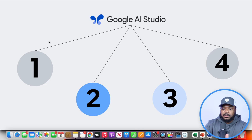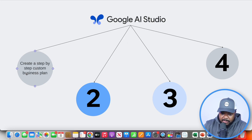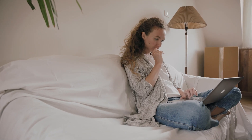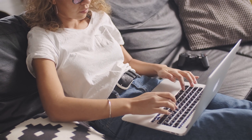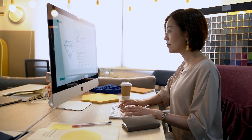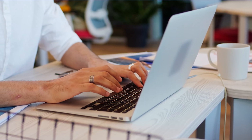Let me quickly jump into one of the first steps, which is that you're going to use the Google AI Studio to give you a step-by-step custom business plan. The specific side hustle I'm going to show you today is one that could be done anywhere around the world, done remotely, and done by anyone. The best part about it is that there are so many different ways you're going to be able to use various AI tools, some of them free, to help make things more efficient.